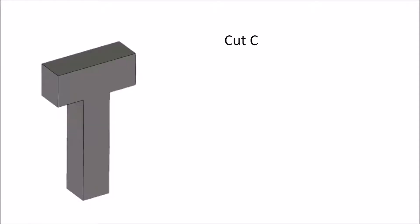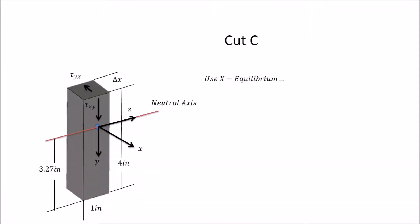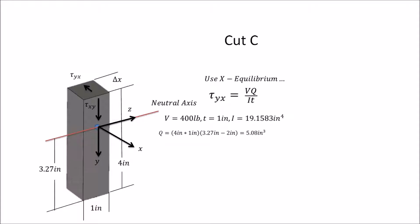Now let's look at cut C, at the top of the web where it joins the flange. Using x-equilibrium with τ_yx = VQ/It, V = 400 pounds, t = 1 inch, and I = 19.1583 in⁴. Q is 4 inches × 1 inch × (3.27 − 2) inches, giving Q = 5.08 in³. Plugging in, τ_yx ≈ 106.064 psi. Equilibrium still holds.